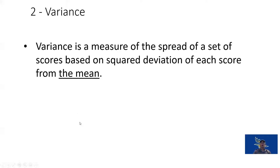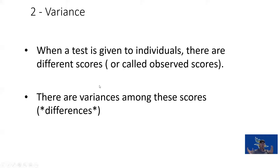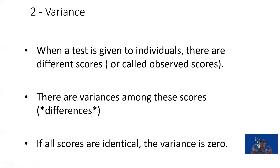Variance is the measure of how scores are spread out away from the mean. Our notation for variance is S-squared. Each individual score is called an observed score, and we're looking for the differences between these scores compared to the mean. If all scores are the same, the variance is zero because there is no distribution.